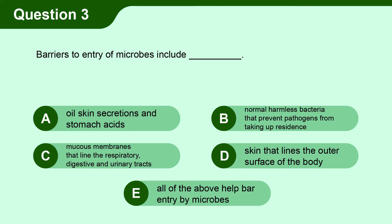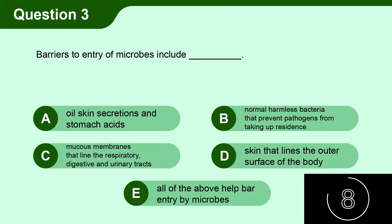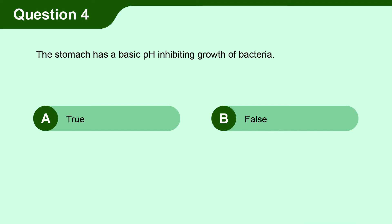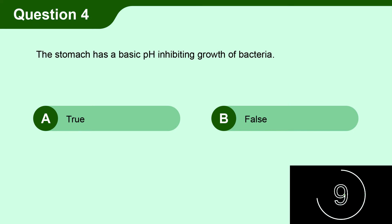Barriers to entry of microbes include: A. oil skin secretions and stomach acids, B. normal harmless bacteria that prevent pathogens from taking up residence, C. mucous membranes that line the respiratory, digestive, and urinary tracts, D. skin that lines the outer surface of the body, E. all of the above help bar entry by microbes.